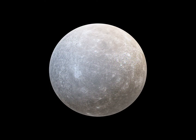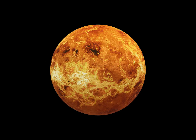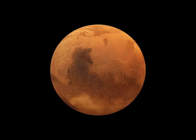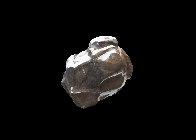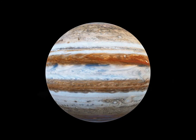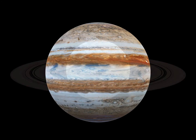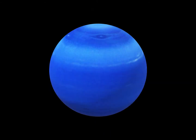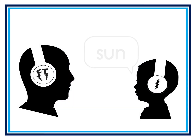Sun. Mercury. Venus. Moon. Earth. Mars. Asteroid. Asteroid Belt. Jupiter. Saturn. Uranus. Neptune. Now repeat after me.